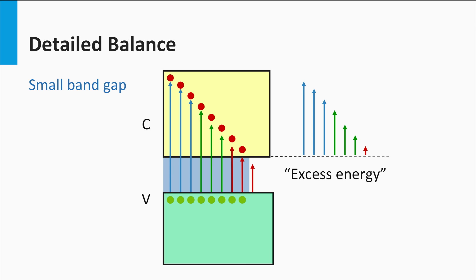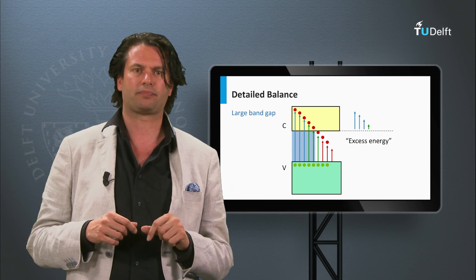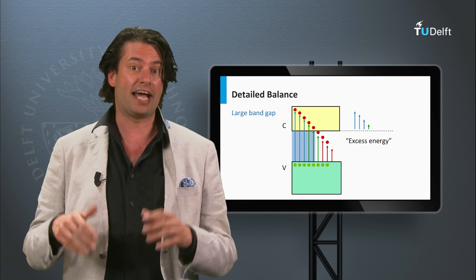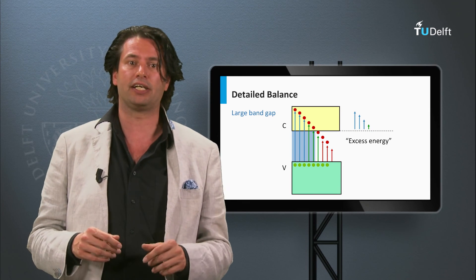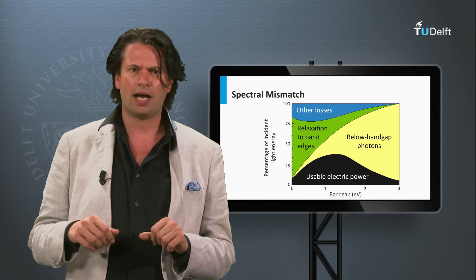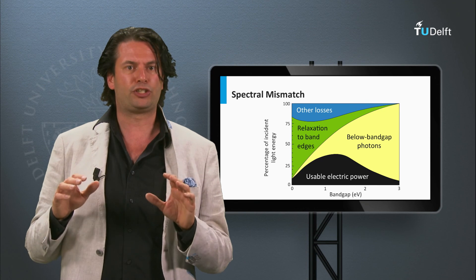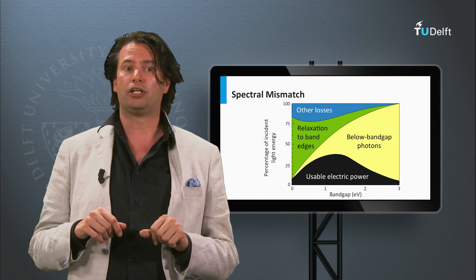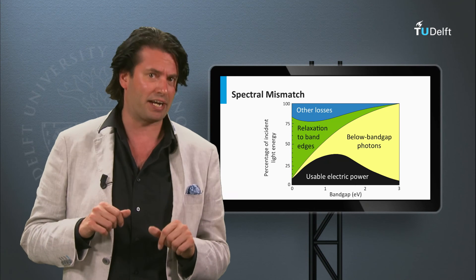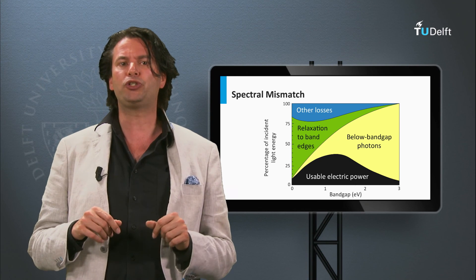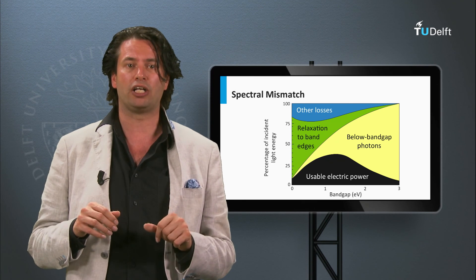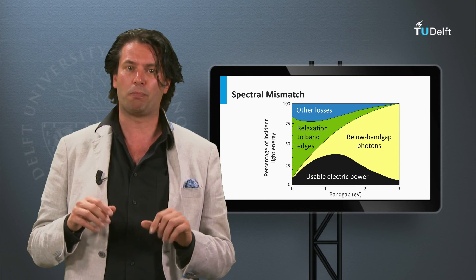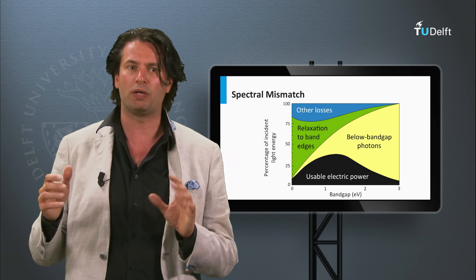Therefore, radiative recombination is enhanced for low band gap materials. For a high band gap material, the energy loss below the band gap is dominant, and the excess energy determines the amount of charge carriers that radiatively recombine. As a result, we get the following picture, showing the loss mechanisms: black body radiation, relaxation of charge carriers to the band gap edges, and lost energy below the band gap.